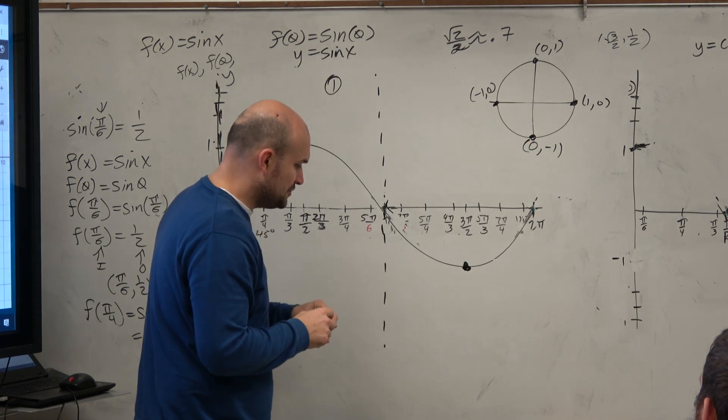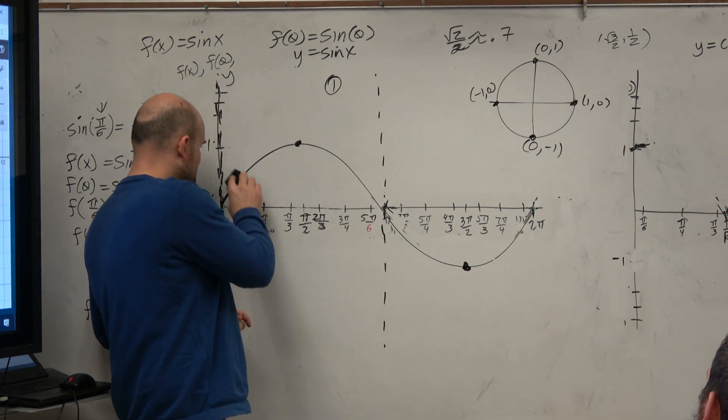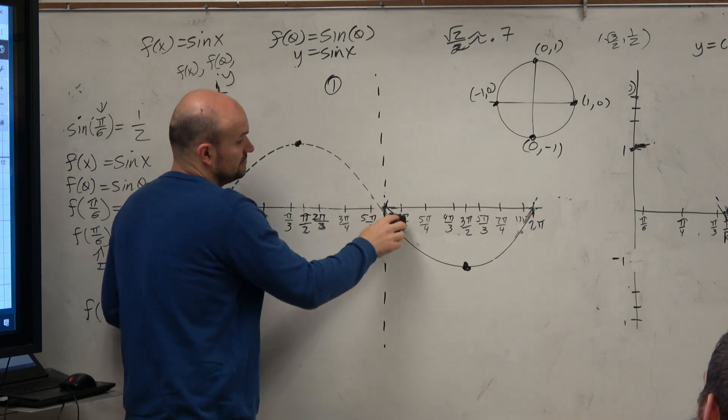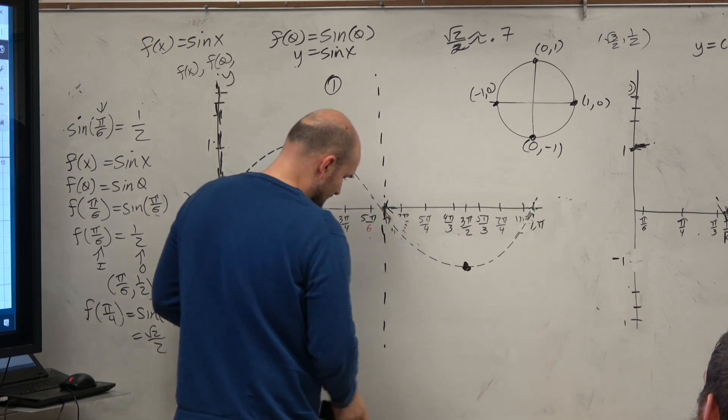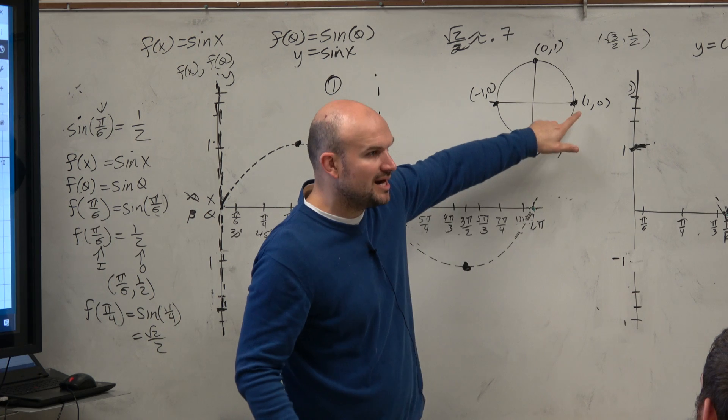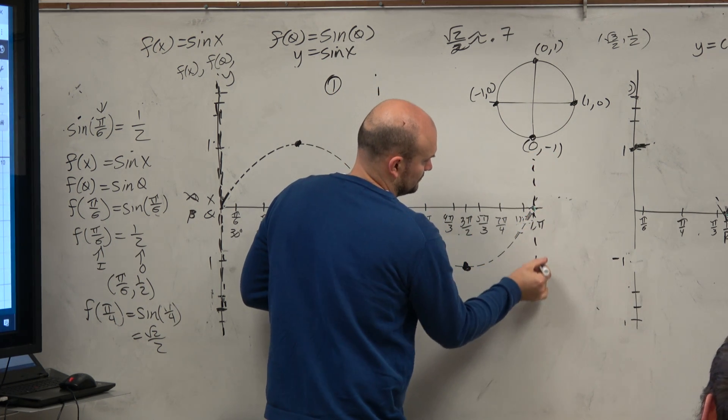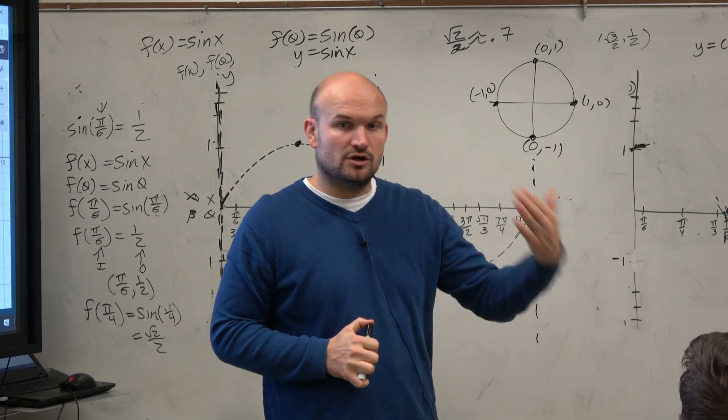Now, I don't want you to confuse the cosecant graph with the sine graph. So I'm just going to dash this, because we're just using this as an aid. Well, you guys can see there are some relationships. At least the relationship so far, and then let's do 2 pi. When we go back to 2 pi, you see, that's going to be another asymptote.